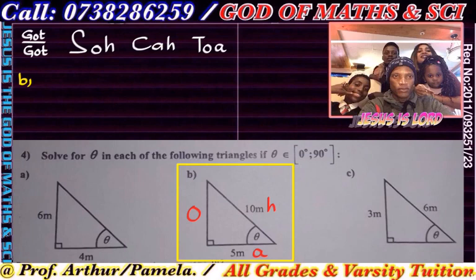So you're gonna write cos of theta equals adjacent, which is the 5, divided by 10. Remember the meters will cancel — this is the same as 1 over 2.